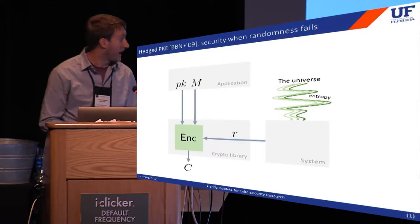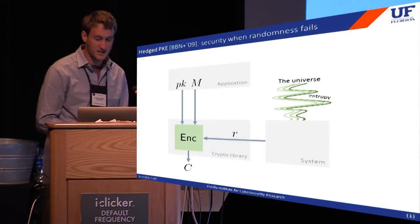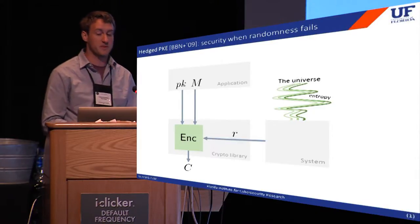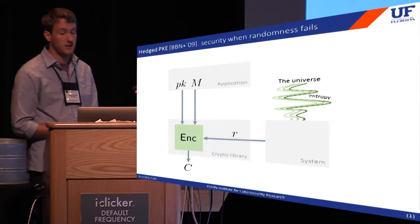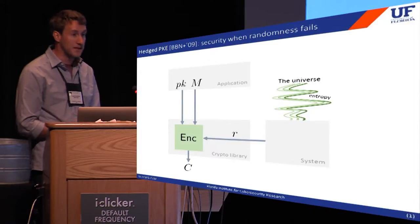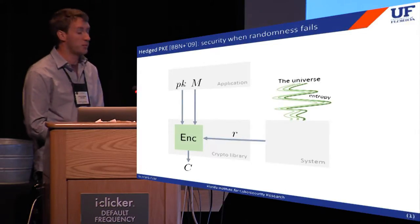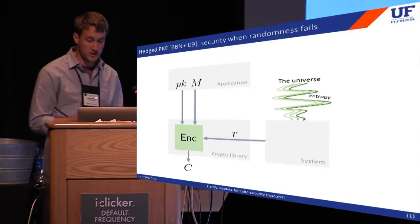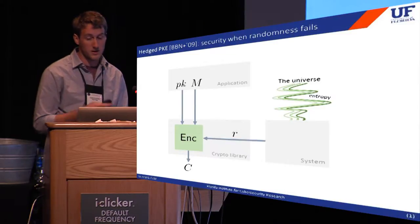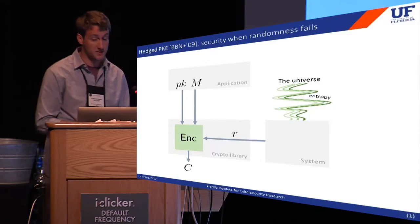The aim of hedge cryptography is to design primitives and protocols that fail gracefully — achieving the usual notion of security when randomness is good, but achieving some weaker yet still meaningful notion when randomness is bad.